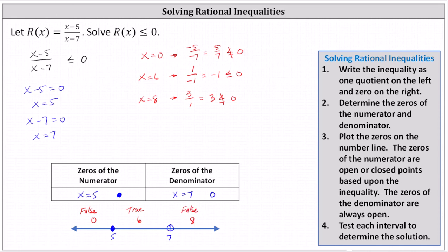This indicates the graph of the solution is the interval from 5 to 7, including 5 and not including 7. The solution using interval notation is the interval from 5 to 7. The interval is closed on 5, so we use a square bracket to the left of 5. The interval is open on 7, so we use a parenthesis to the right of 7. This is the solution expressed using interval notation.